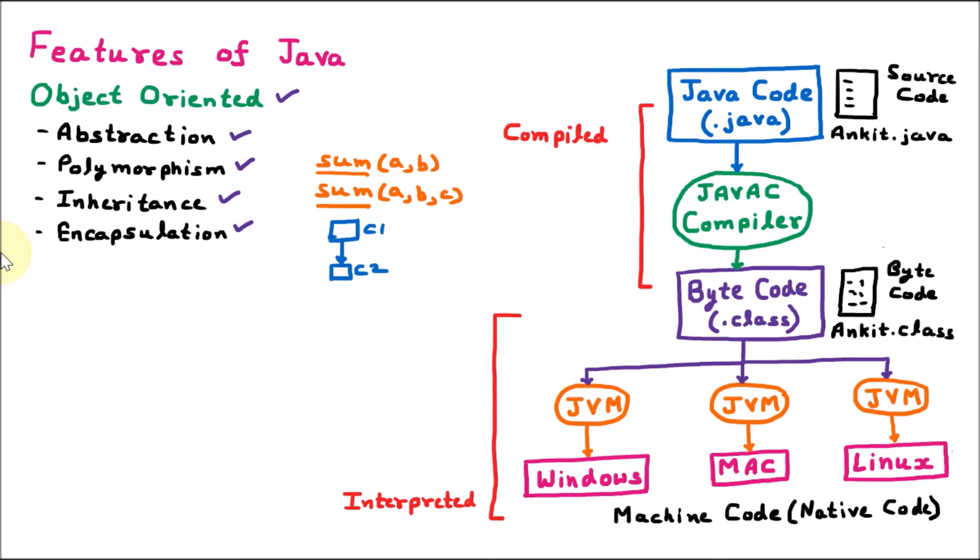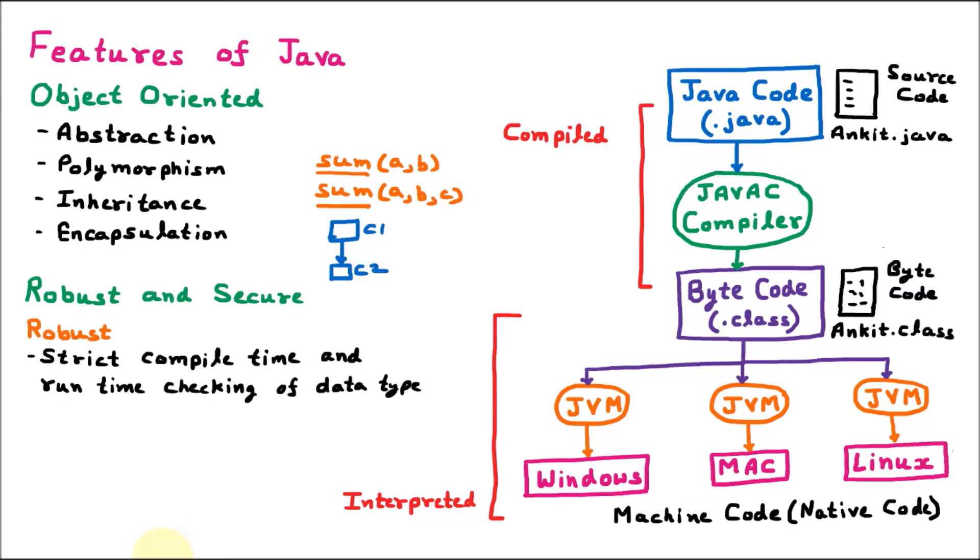The next feature of Java is that it is robust and secure. Java is robust because it has strict compile-time and run-time checking of data types. When we are writing the code, that is compile time — Java strictly checks data types at that point. And when you run the program, that is run time — data types are checked there too. Java is also robust because it handles memory management as well as exception conditions.